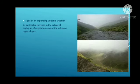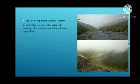A noticeable increase in the drying up of vegetation around the volcano's upper slopes is another sign. In the upper slope portion of a volcano, plants are destroyed over a wide area during an eruption. However, volcanic soil is very rich, so once everything cools down, plants can make a big comeback.